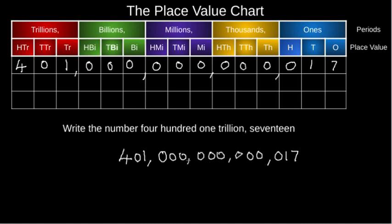Don't think that because it's zero it's nothing and you can just write four hundred one then 17 directly. That would actually be four hundred one thousand and seventeen. That's why even though zero is nothing, its place value is still significant — in calling numbers out correctly and identifying numbers correctly.